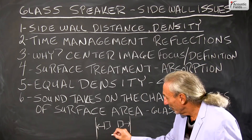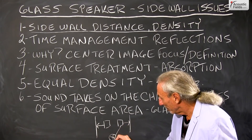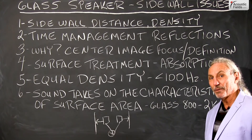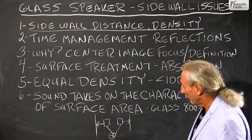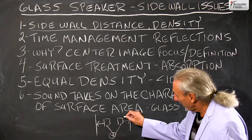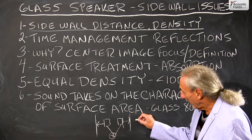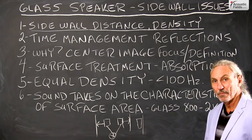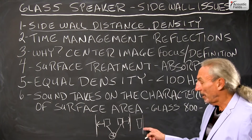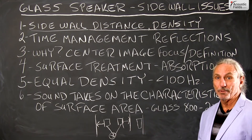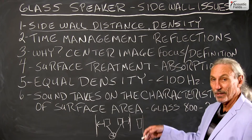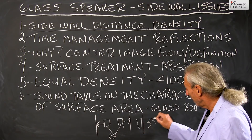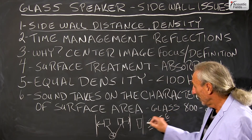There is no compromise. We simply cannot have distances on the sidewalls that are unequal. We have to calculate what that distance is, and I can tell you with utmost certainty that it's not against the wall. How far will depend on many other variables — usage, what we're trying to accomplish in the room. The speaker boundary interference effect here is critical.